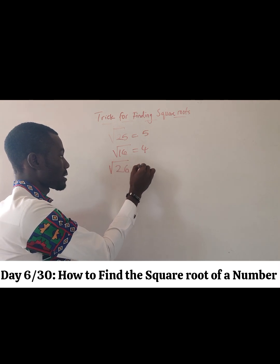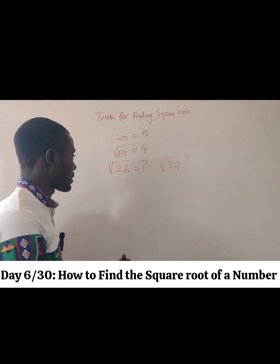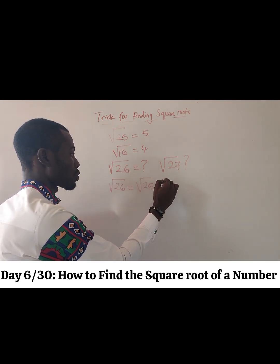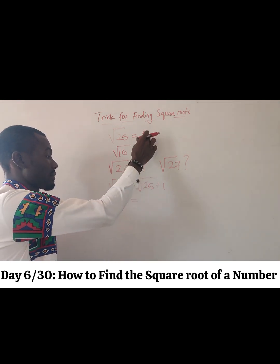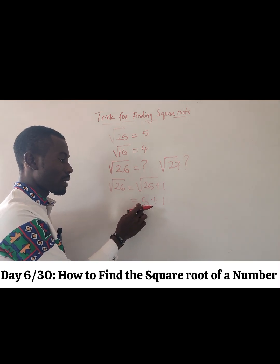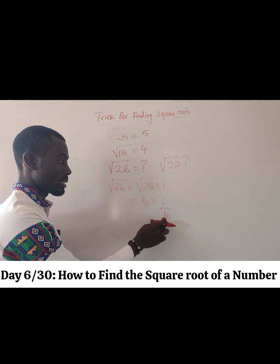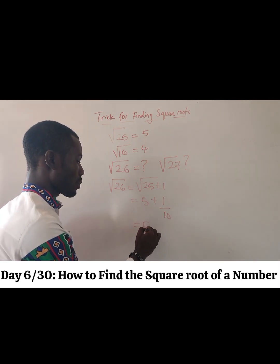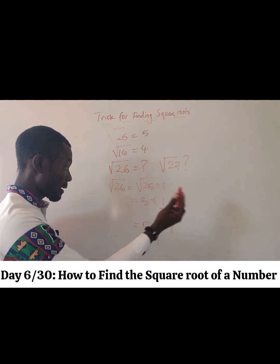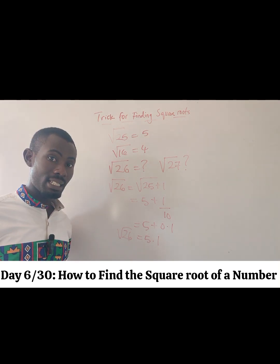Here is how you go about it. 26 is the same thing as the square root of 25 plus 1. The square root of 25 is 5, so I have 5 plus 1. I'm going to double this number and divide 1 by it — double of 5 is 10, so 1 divided by 10 is 0.1. Therefore, 5 plus 0.1 gives me 5.1, and the square root of 26 is 5.1.